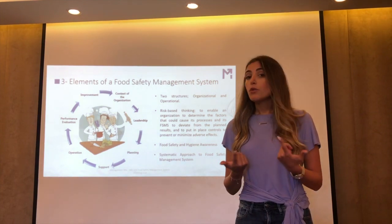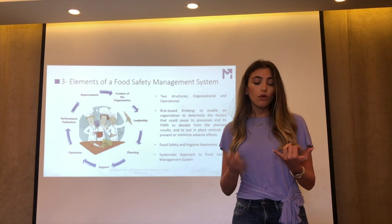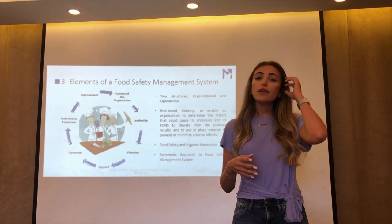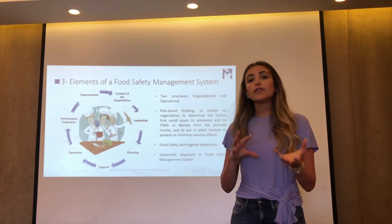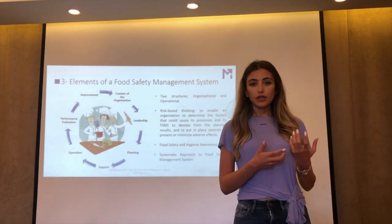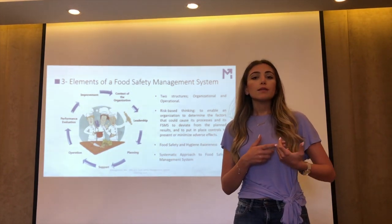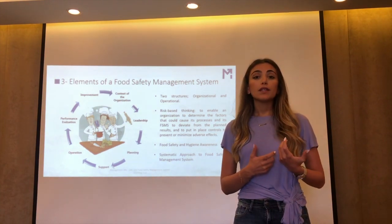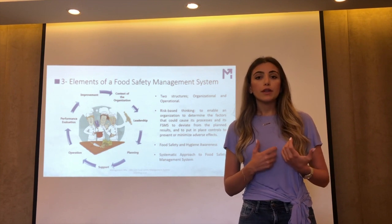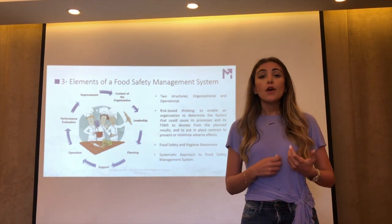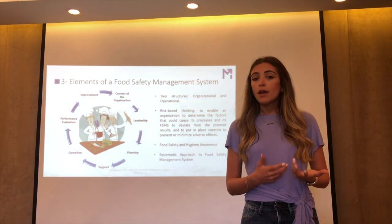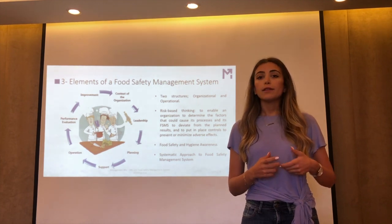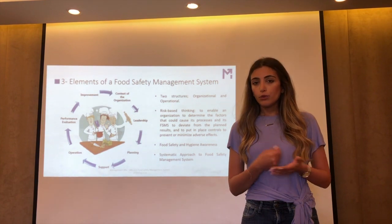When we say resources, we do not only mean human resources, but also financial and infrastructural resources. The standard has been divided into two structures: the operational structure and the organizational structure. The organizational structure is more concerned with HR and resources, so the organization must ensure that all employees know their responsibilities and are competent in their jobs to achieve their intended results — for example, purchasing ensuring that all suppliers are approved and raw materials are of good quality.